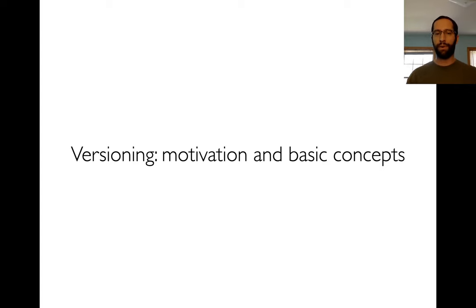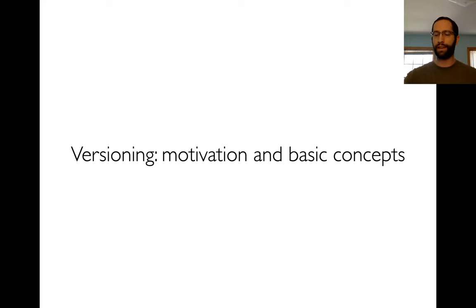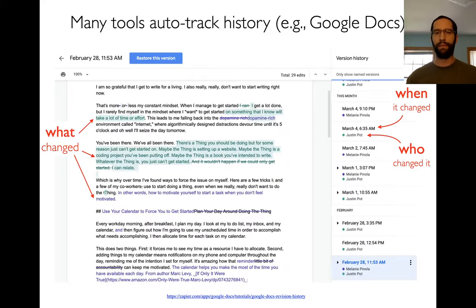Let me motivate a little bit more why we care about different versions. There are lots of use cases here, and I'll lay down some basic concepts in this video. The next video we'll look at a real tool, which is Git. Versions are really about tracking history — there are different versions or checkpoints of some piece of work over time.